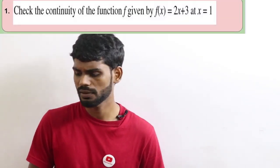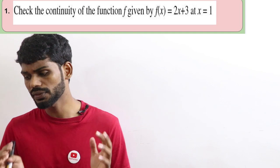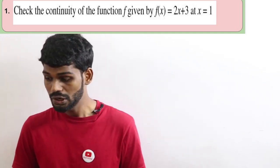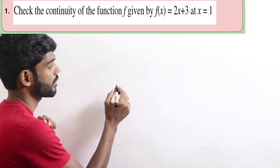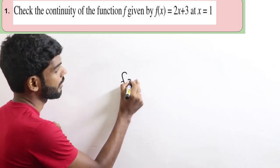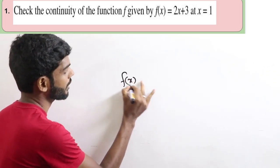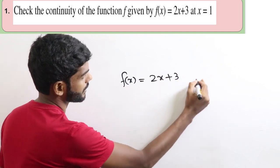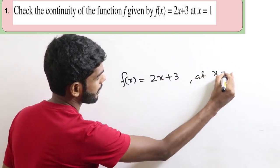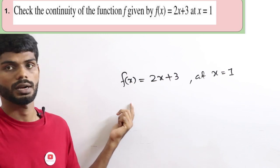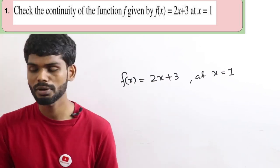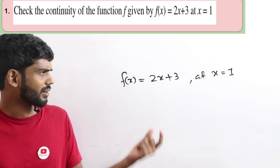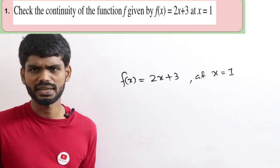You already have to check the continuity of the function given by f of x equal to 2x plus 3, at x equal to 1. So, f of x equal to 2x plus 3 at x equal to 1. The function 2x plus 3 is what we call a linear function.